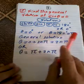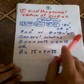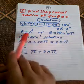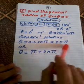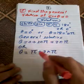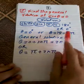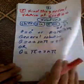Sine theta equals 0 when theta equals 0 or theta equals 180 degrees, which is pi radians. The general solution is theta equals 2nπ or theta equals nπ.